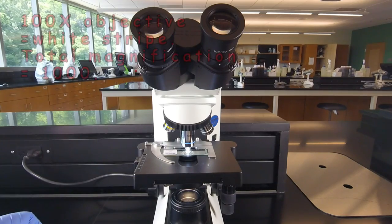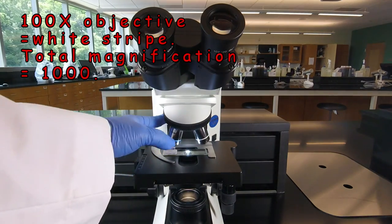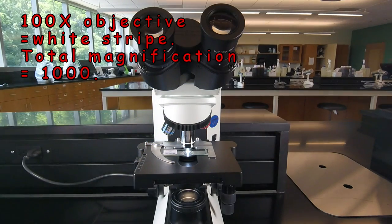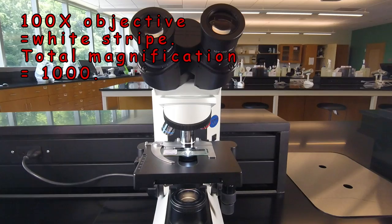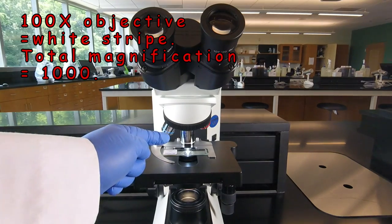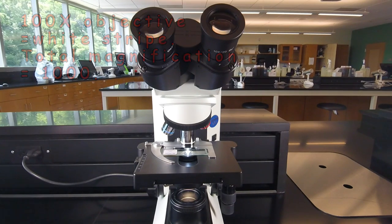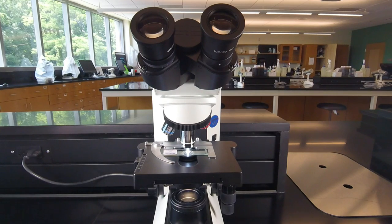And finally, and most frequently in this class, we're going to be using the white striped 100x oil immersion objective. So the total magnification there will be 100 of the objective times 10 of the eyepiece. We're seeing the image 1000 times its real size. Now that lens has to be placed in a drop of oil on the slide.